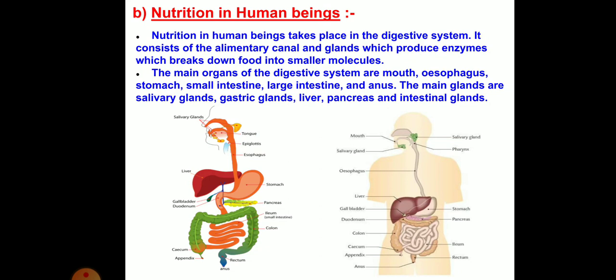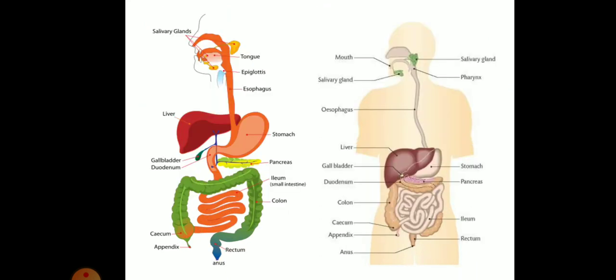If you observe the diagram, you will identify the tract of the alimentary canal. The liver is the biggest gland in human beings. Also observe the presence of the salivary glands, which are present in the mouth.